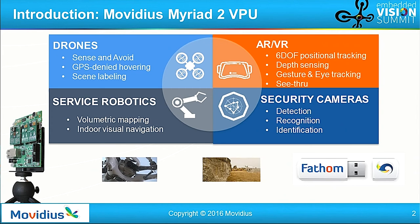This gives us good visibility about what we should expect when we deploy in our final product. We were using what we call the Fathom Stick, which is powered by the same VPU that powers the DJI drone and other products — a very efficient and handy device.